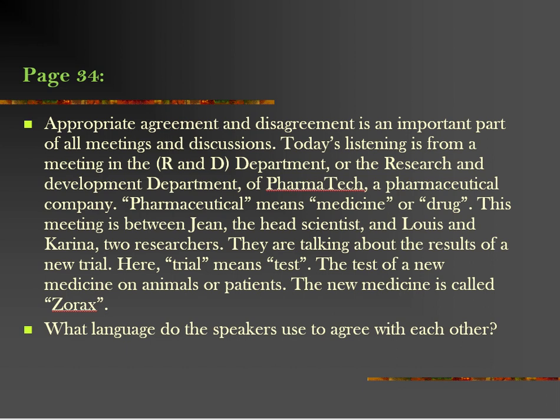The listening takes place in the R&D department of Pharmatec, a pharmaceutical company. Pharmaceutical means medicine or drug. This meeting is between Gene, the head scientist, and Lewis and Karina, two researchers. They're talking about the results of a new trial. Here, trial means test — the test of a new medicine on animals or patients. The new medicine is called Zorix. Let's listen.